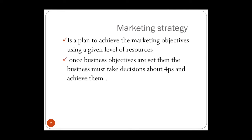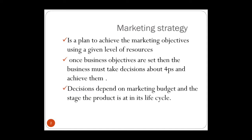A marketing strategy is a plan that the business sets in order to achieve its marketing objectives using its own resources. The marketing mix has four P's — product, place, price, and promotion — in order to achieve marketing objectives like increase in sales, increase in market share, brand awareness, customer loyalty, and improving brand image. We need a strategy that designs the appropriate marketing mix, sets suitable prices, and does suitable promotions in order to achieve those objectives.